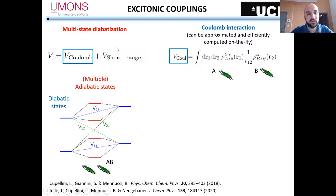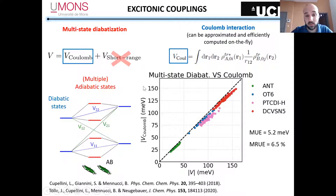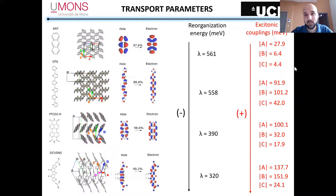The excitonic coupling is written as a sum of Coulomb interaction plus short-range interaction. We compared this Coulomb coupling to multistate excitonic couplings using diabatization methods. You can see that for all these systems, the correlation is actually pretty good, and we can safely neglect the short-range part.